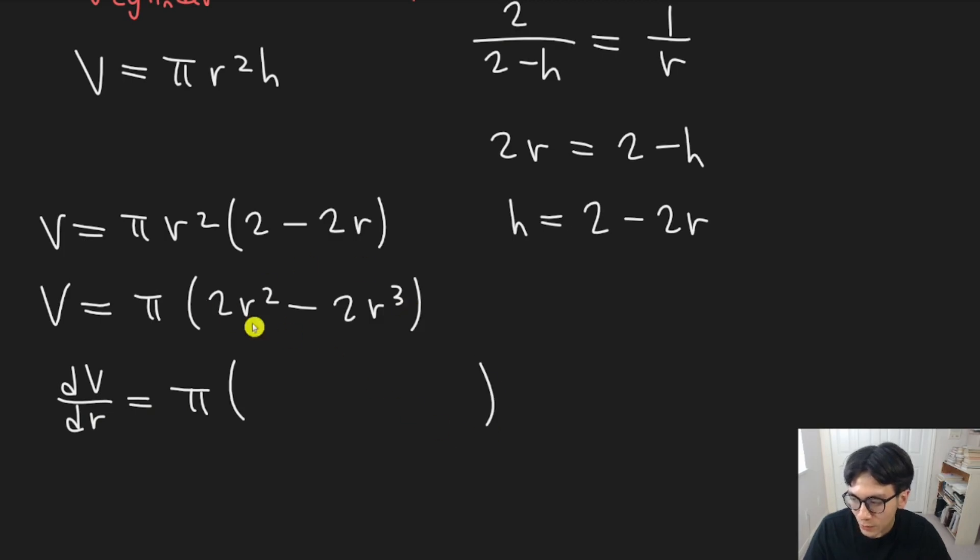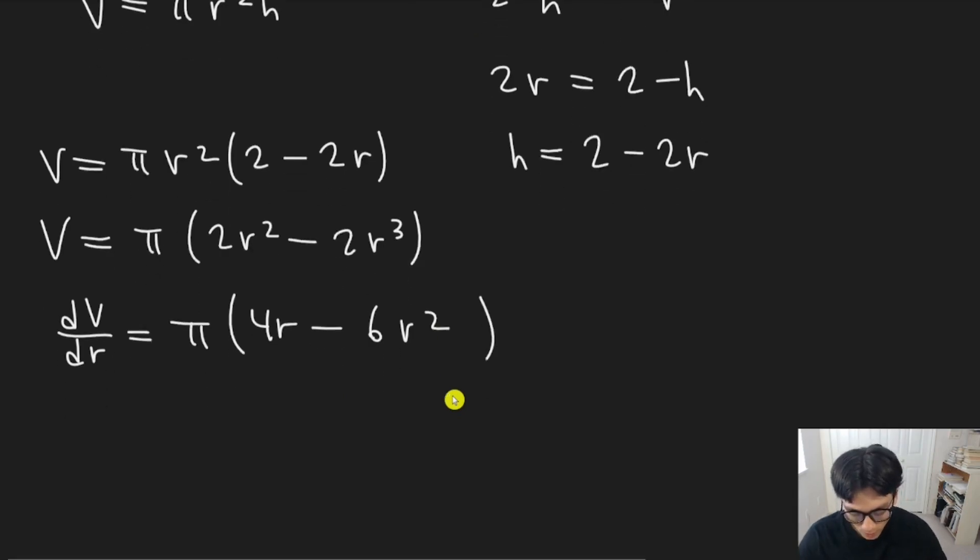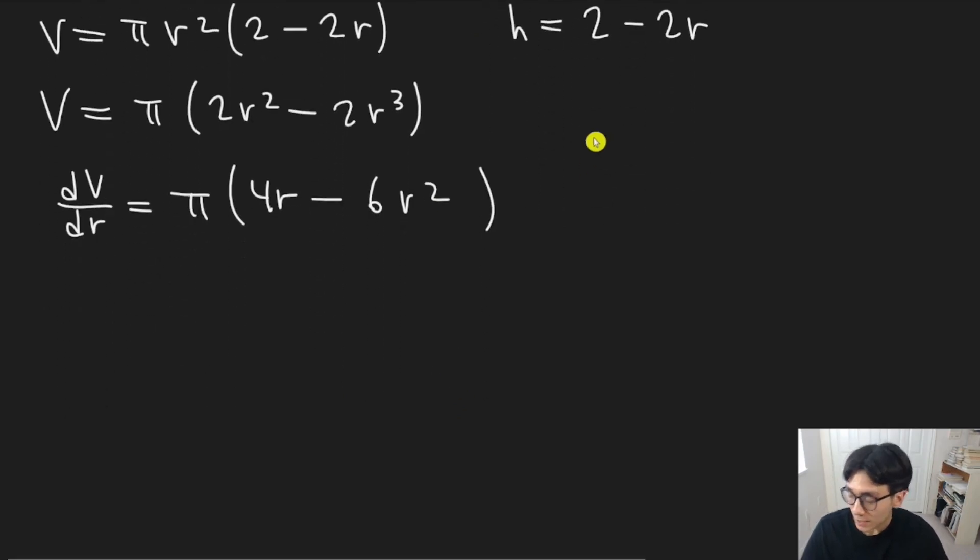Now if I take the derivative of both sides, I'm going to get dv dr equals pi. And then I have to take derivative of this. Well, it's going to be four r minus six r squared. And when we're optimizing, our goal is to find the maximum. And to do that, we need to find where critical points, which is where the derivative is zero. So we want to figure out when is this zero?